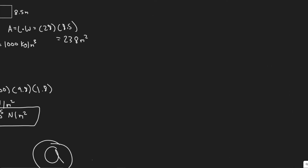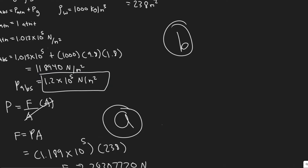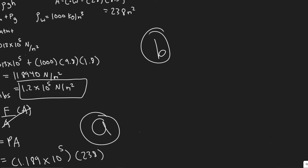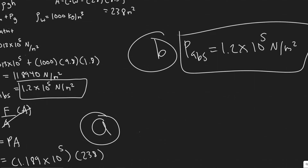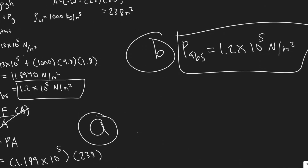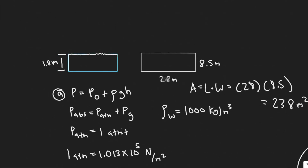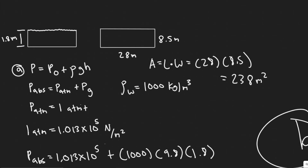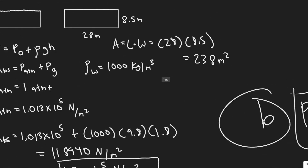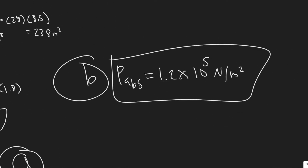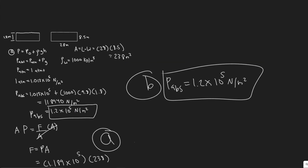Now let's move on to part B, which will be pretty quick. They ask: what will be the pressure against the side of the pool near the bottom? The answer is the same value: 1.2 times 10 to the 5 newtons per meter squared. The reason is that pressure doesn't have a direction — it's only dependent on how far down you are. So the pressure at the side of the pool at the bottom depth is the same as at the bottom itself.